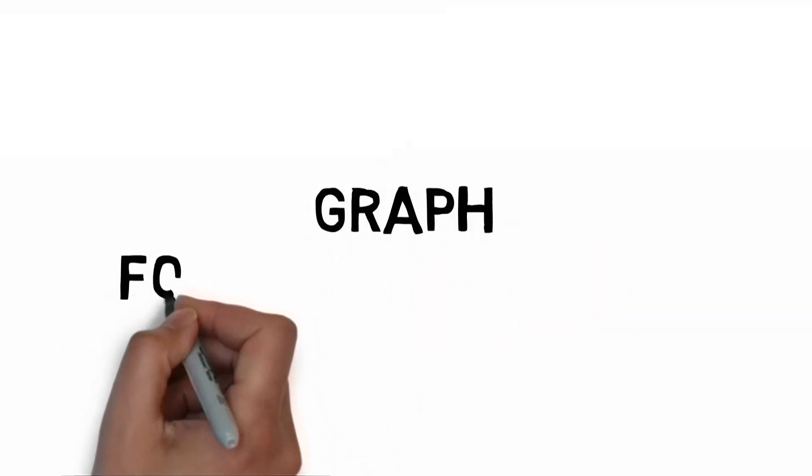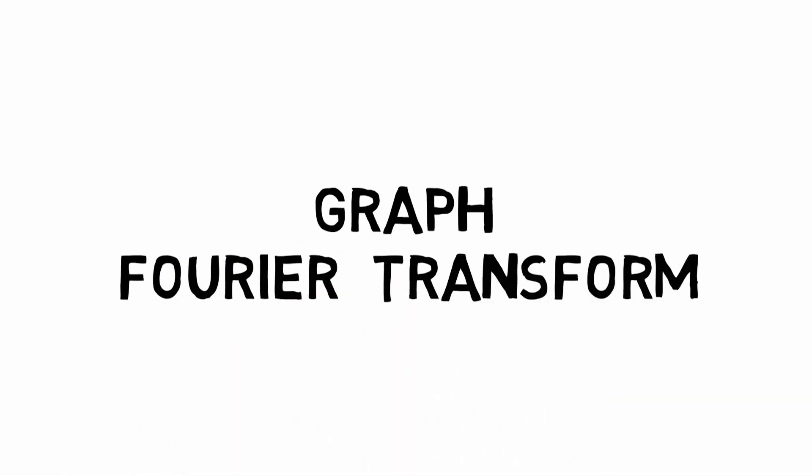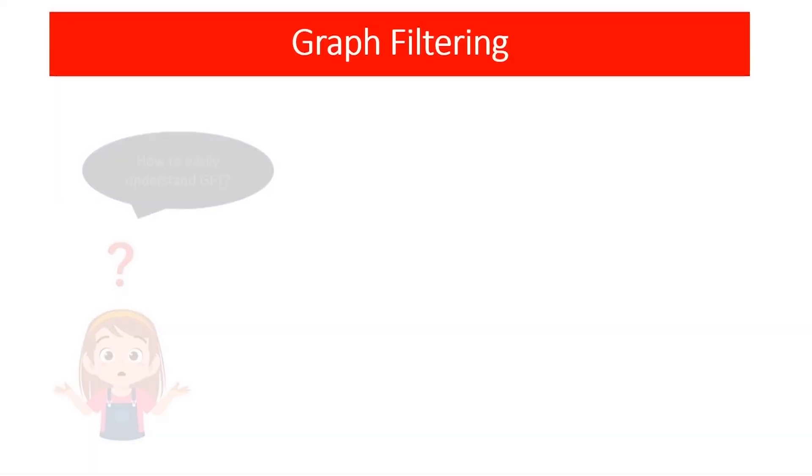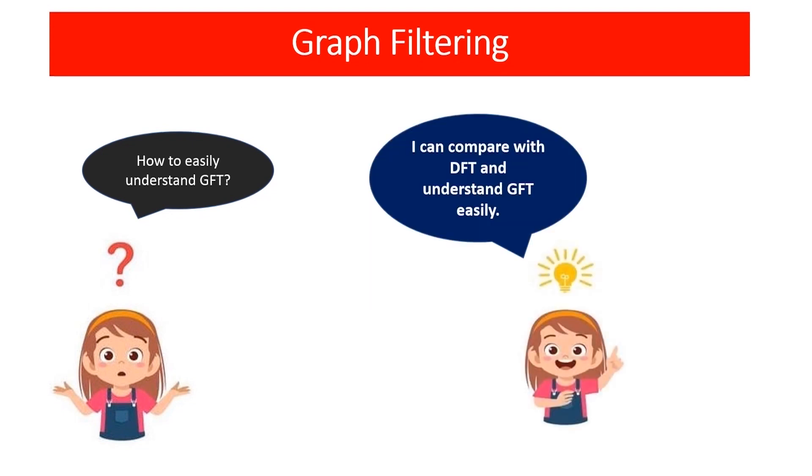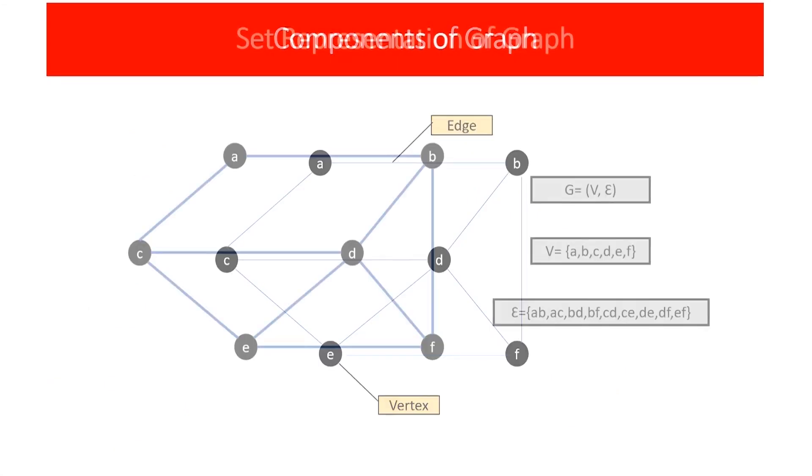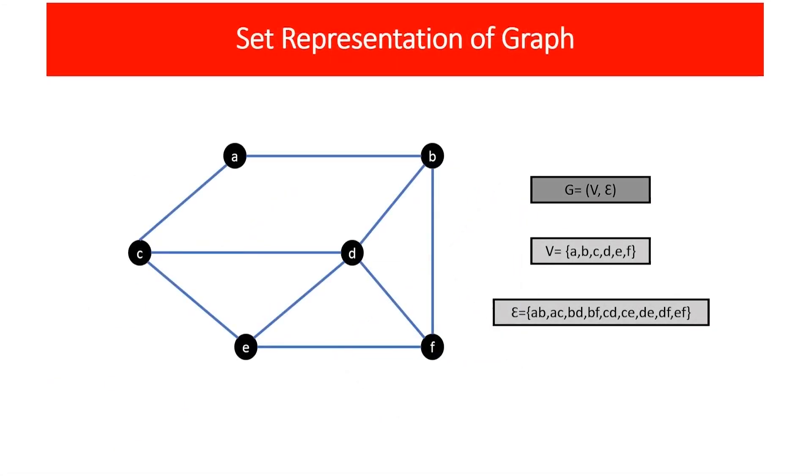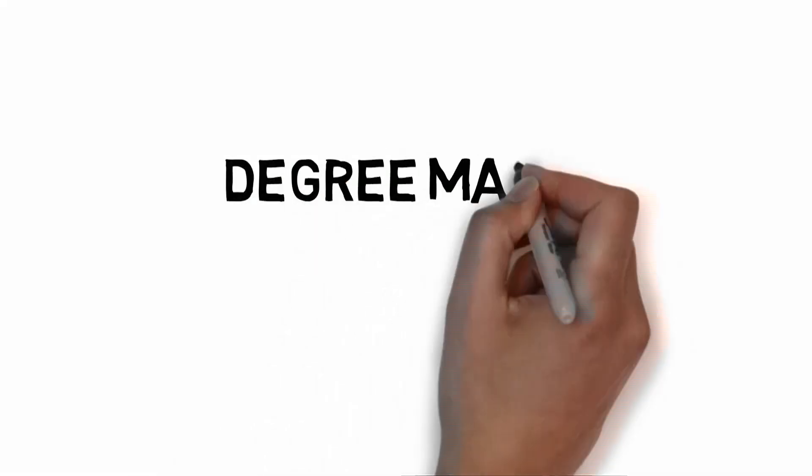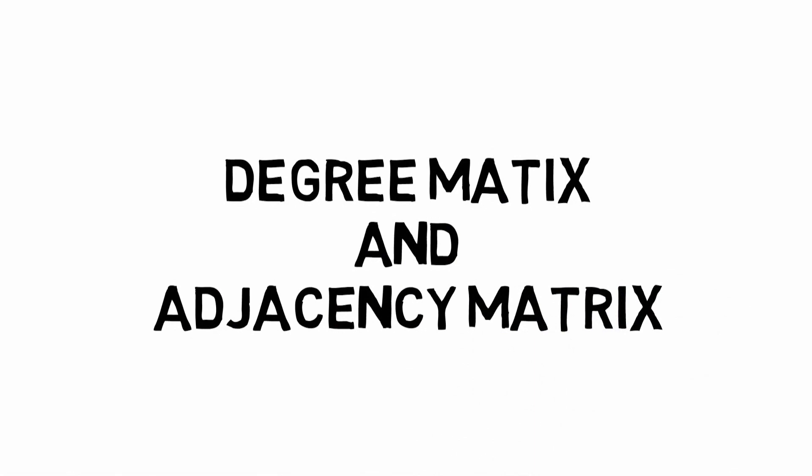To learn about graph filtering we should know what a graph Fourier transform process is. It would be easier to compare this process with discrete Fourier transform because we are familiar with discrete Fourier transform. If we denote vertices and edges in a set form, it will be like. To do mathematical calculations we should change the vertices and edges to vector form. We are introducing degree matrix and adjacency matrix.